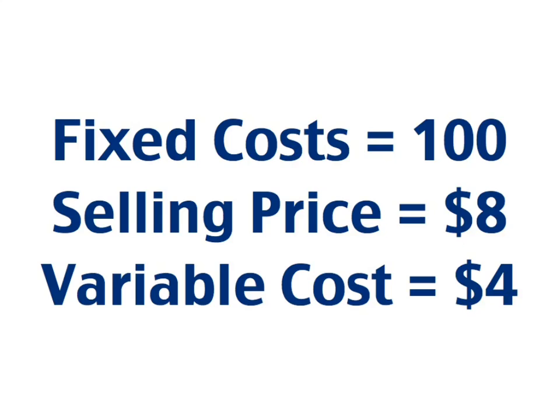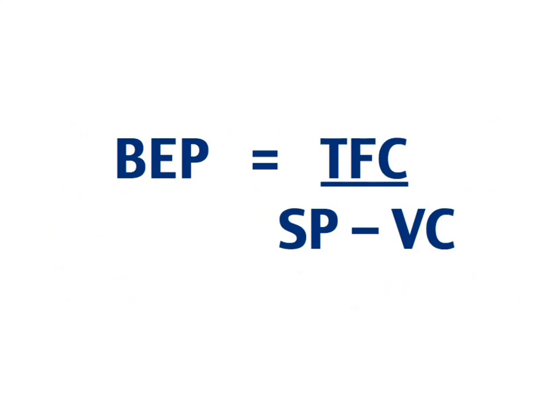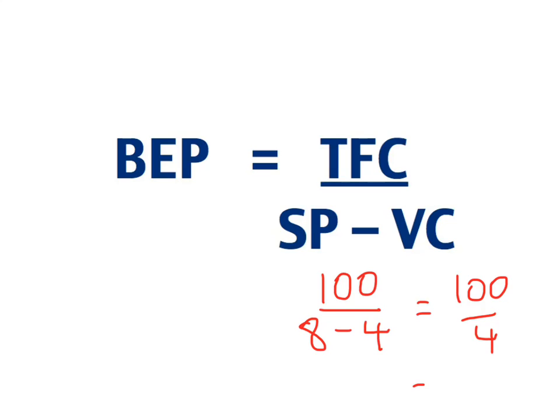Let's look at an example where my fixed costs are $100, I sell a product for $8, and it costs me $4 to buy. Putting those numbers into the equation: $100 ÷ ($8 − $4) = $100 ÷ 4 = 25 units. That means I would need to sell 25 units in order to break even. If I sell less than 25 units, I make a loss. If I sell more than 25 units, I start to make a positive profit.